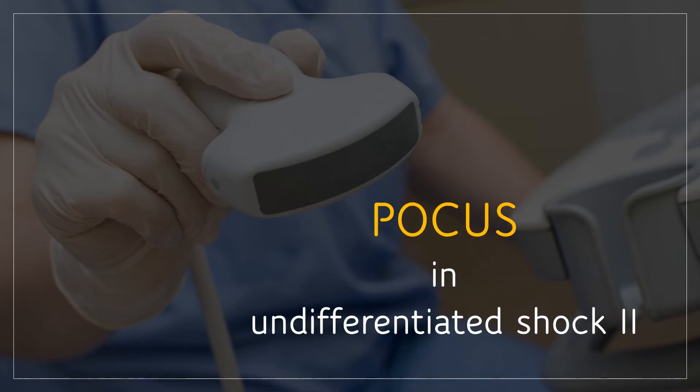In a patient with undifferentiated hypotension, focused assessment using point-of-care ultrasonography aids in diagnosis and management. Ultrasound assessment of the heart, lungs, inferior vena cava, and limited evaluation of the abdomen is helpful in this setting.